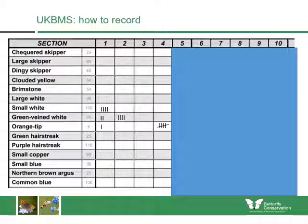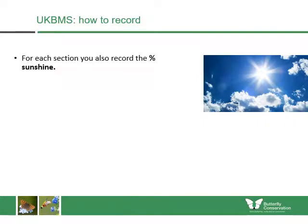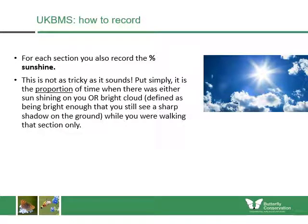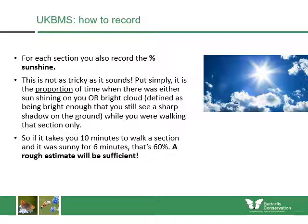You'll also be recording the percentage of sunshine for each section. It's the proportion of time when there is either sun shining on you or bright cloud during that section — bright cloud being cloud bright enough so you can still see a sharp shadow on the ground. For example, if it takes ten minutes to walk a section and it was sunny for six minutes, that's 60%. A rough estimate in increments of 10 to 20 to 30 percent is sufficient.